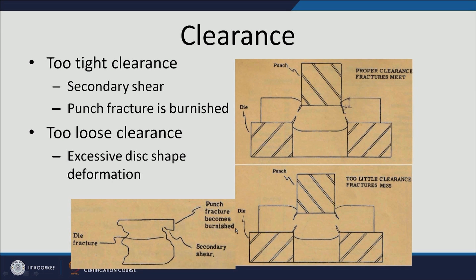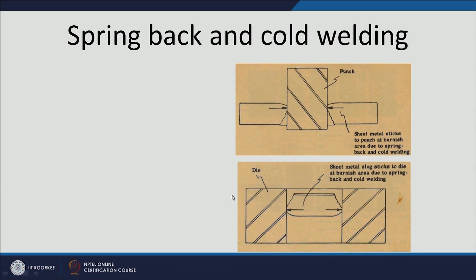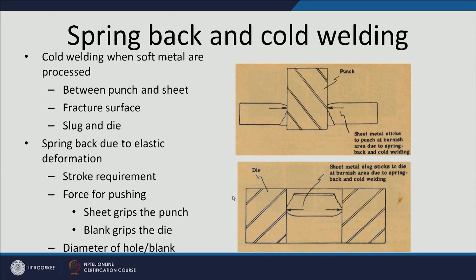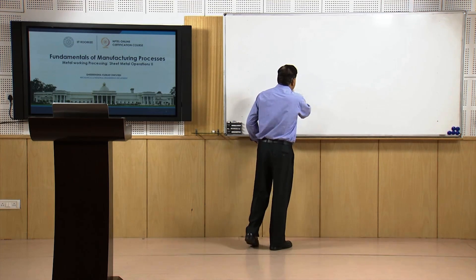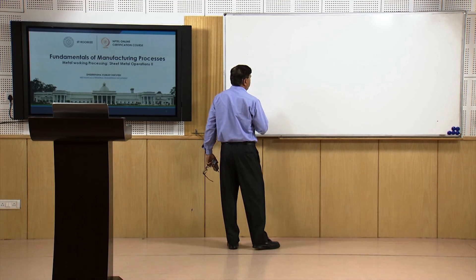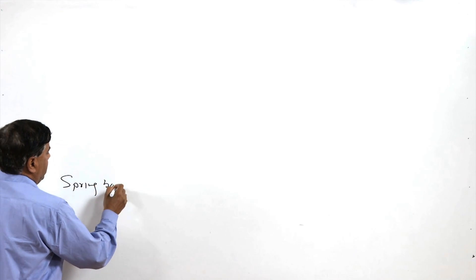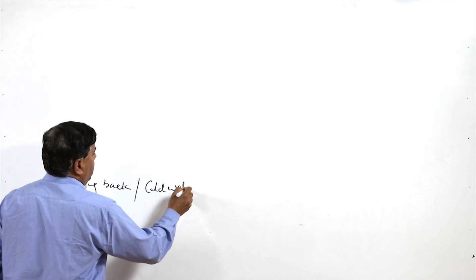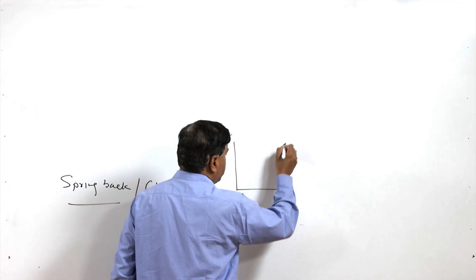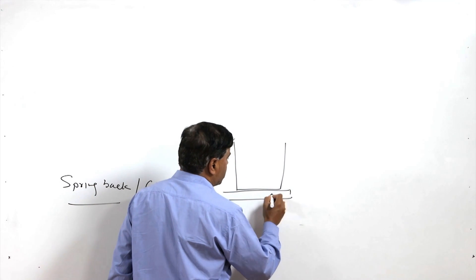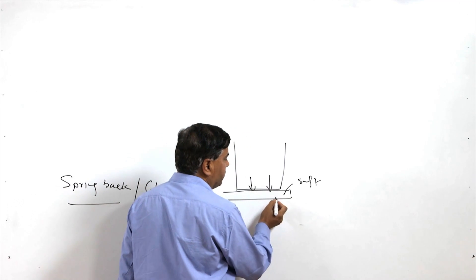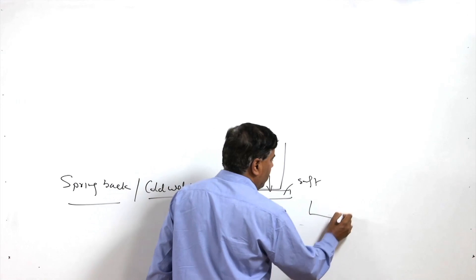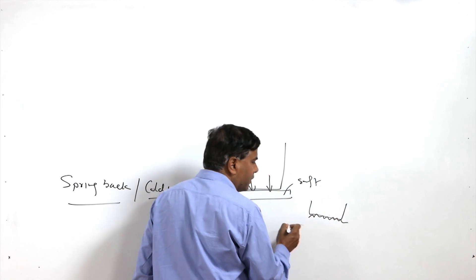A secondary shear edge is produced that is rougher compared to what is produced when the clearance is optimum. Spring back is another phenomenon. Cold welding is another important thing: when the punch comes in contact with the sheet metal, if the sheet metal is soft, the punch puts a lot of compressive force onto it, and the sheet metal gets embedded into the surface of the punch even under low temperature conditions.